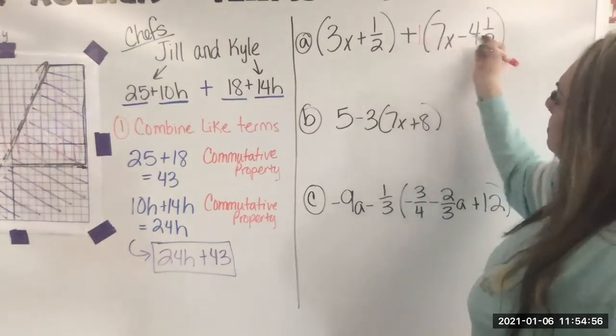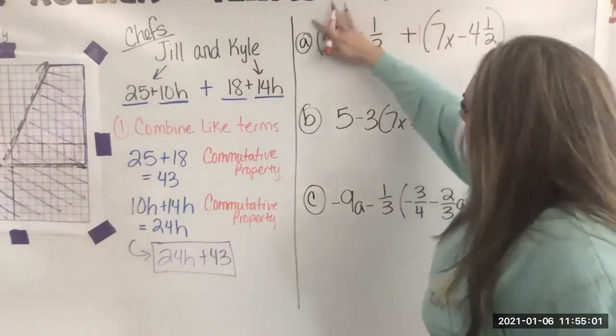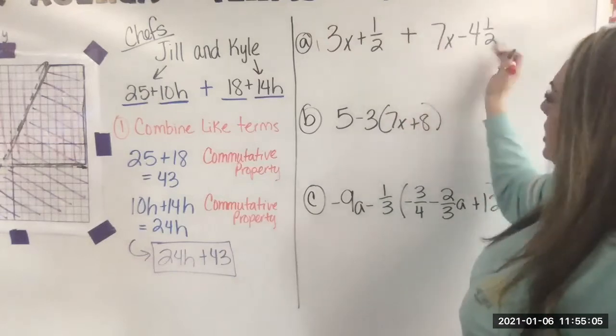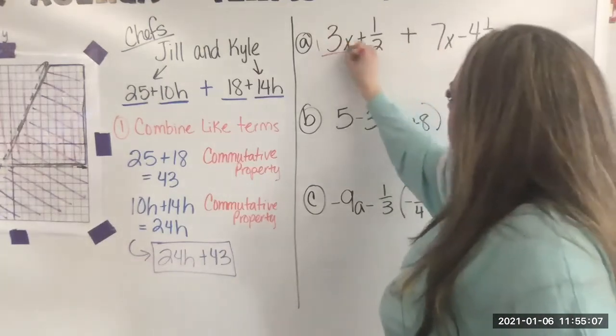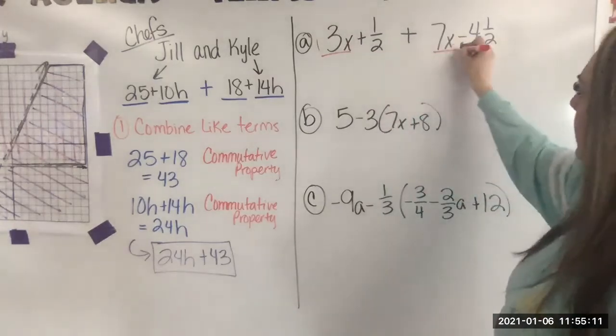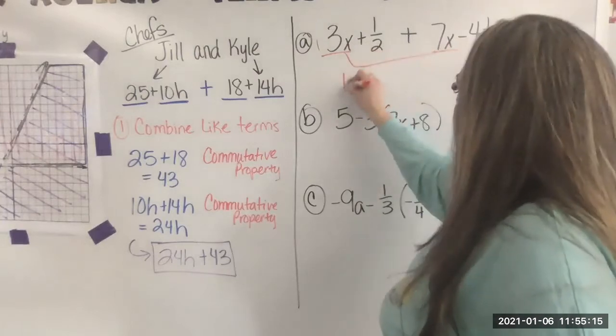So now I'm looking for like terms. I can think of this without the parentheses. I can just think of it as just like that. Nothing has changed. So I'm looking, I have a 3X. I'm looking over here to see if I have another term with an X and I do. I'm going to add those together and I'm going to get 10X.